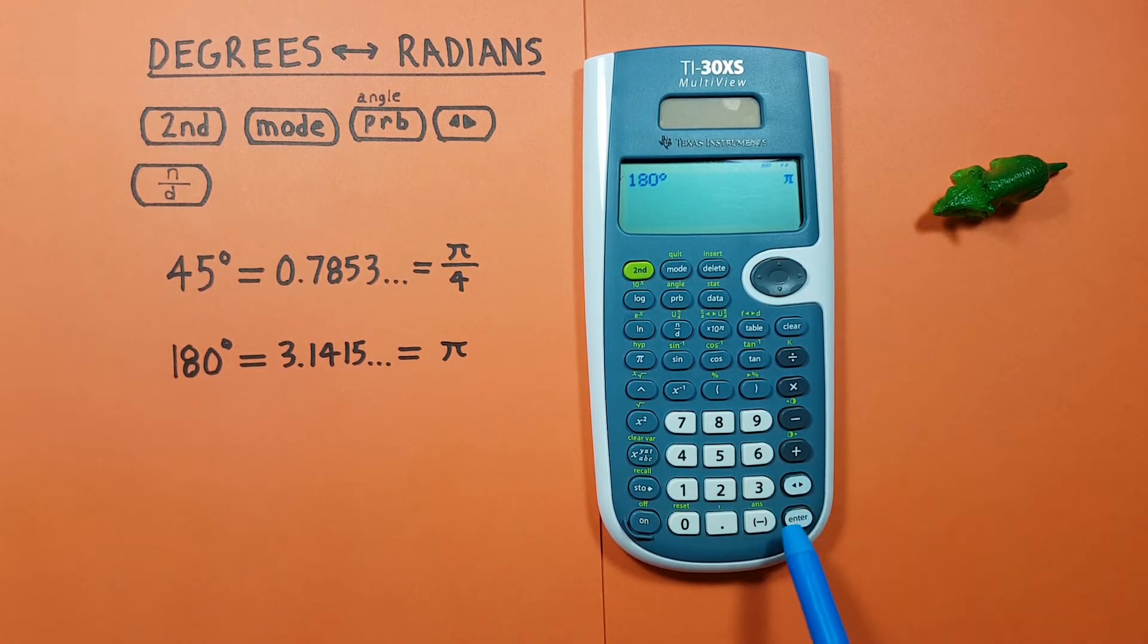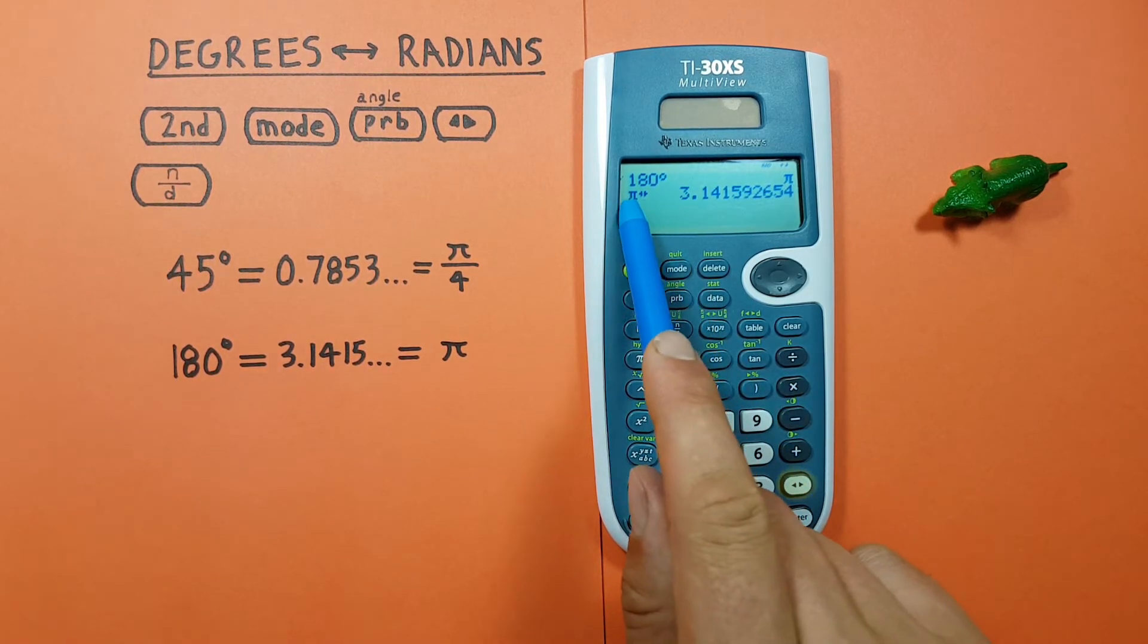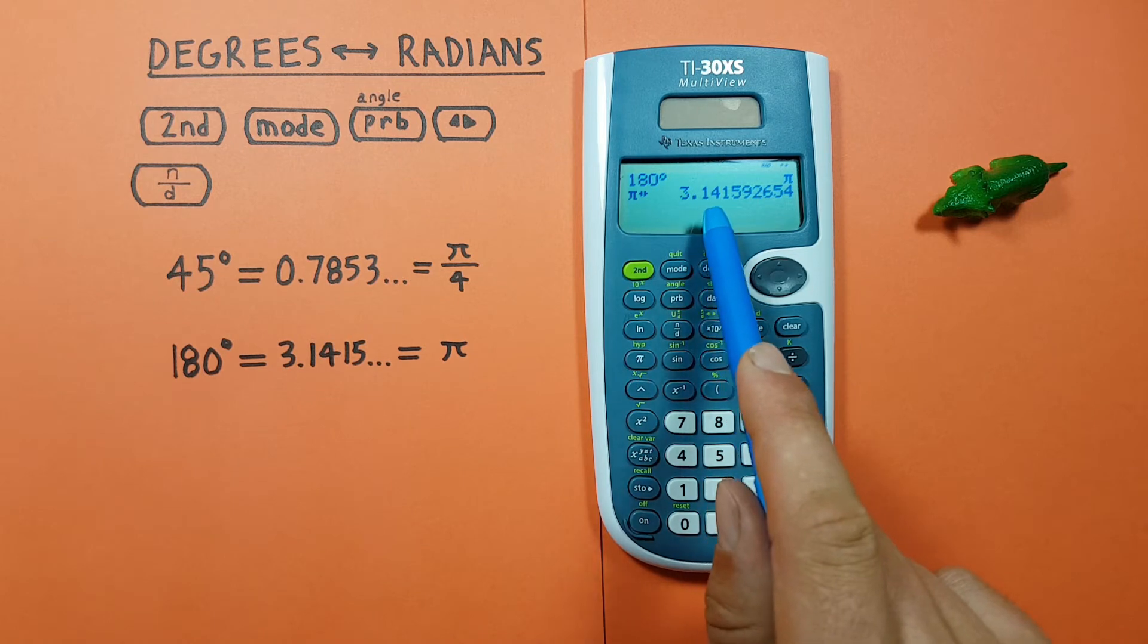And if we want to get that as a decimal, we can press the conversion key. And so we get pi is equal to 3.1415, etc.